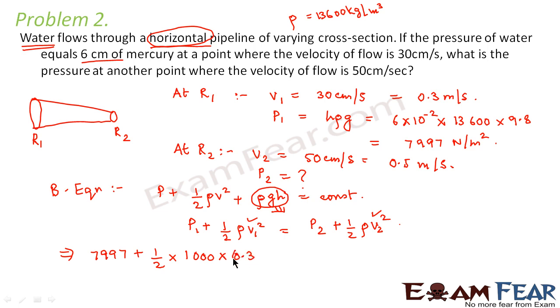V1 is 0.3 whole square. This is equal to P2 plus half into rho that is 1000 into V2 that is 0.5 whole square.